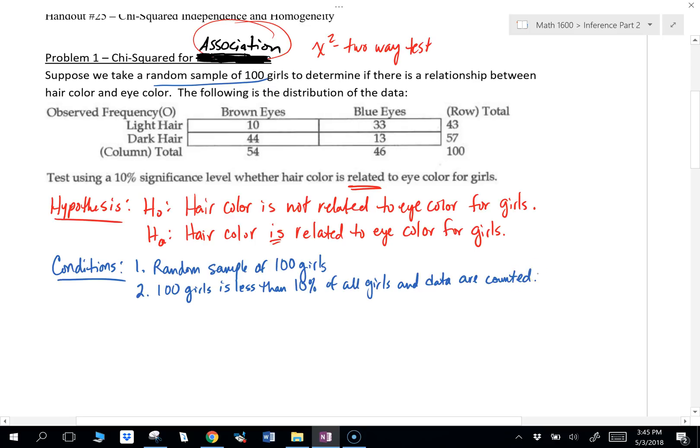You could also use the independence condition. But I don't know if it's okay to make the assumption that each girl's independent, like each girl's hair color and eye color is independent of every other girl. Because if the girls are related, they might not be independent. So I think we're going to settle with less than 10%.